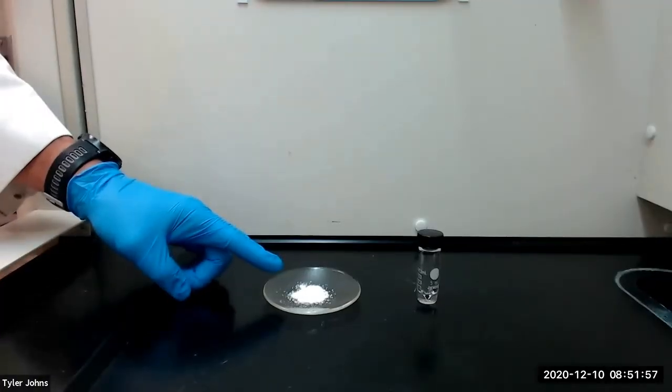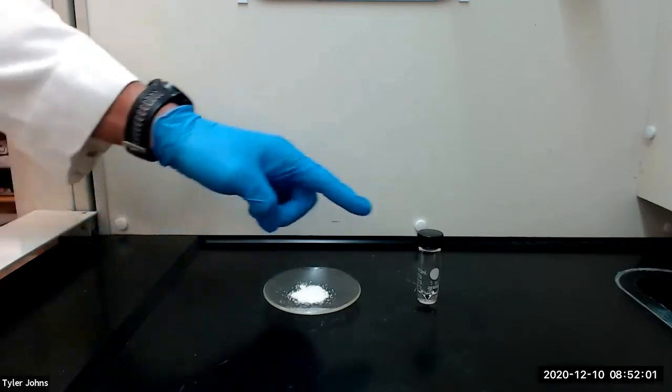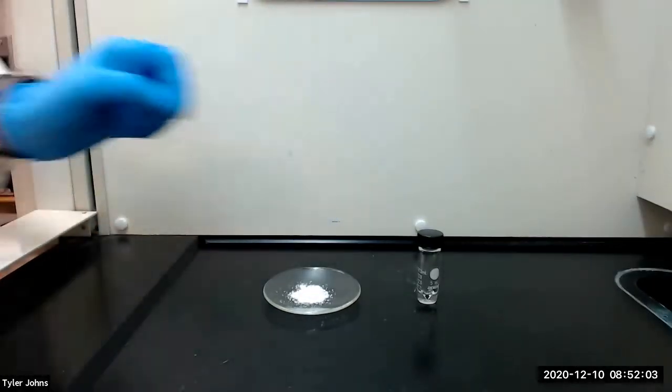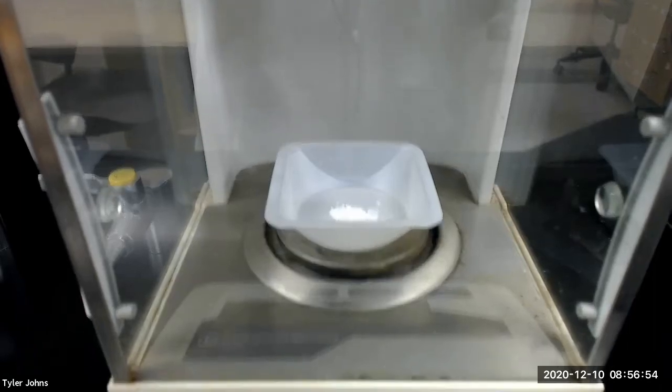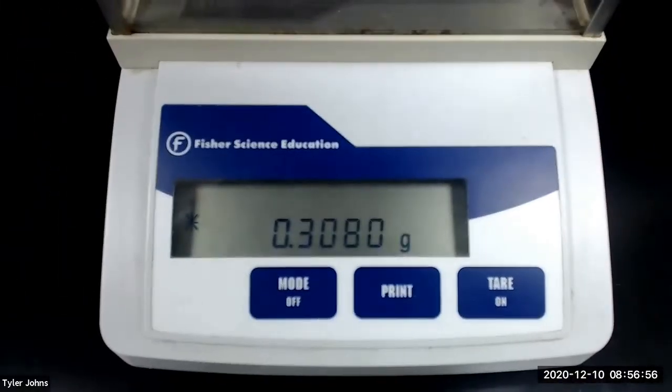To begin, we will add approximately 0.3 grams of the benzoin product from part A to a 5 milliliter conical vial. The mass of benzoin that we will be using is 0.3080 grams.